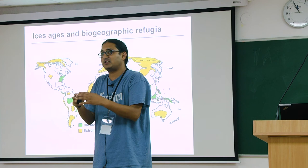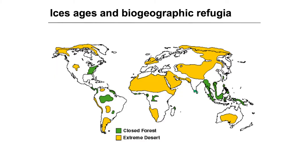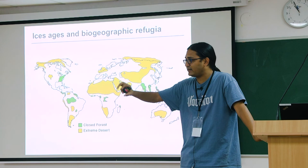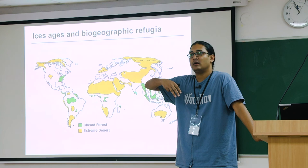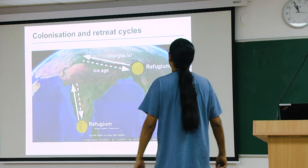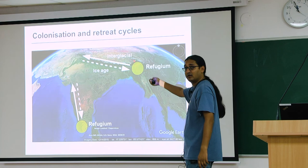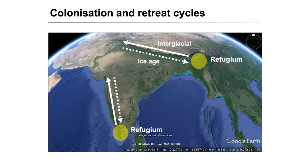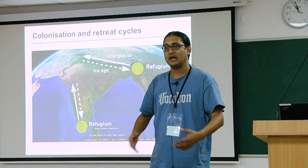The refugia in the Indian subcontinent were Northeast India and the Southern Western Ghats and Sri Lanka. Once species contracted into refugia and the ice started melting, suitable habitat returned and species came out of the refugia to recolonise. During the Ice Age, species retreat to refugia; during interglacials, they recolonise from refugia. We've had multiple cycles of glaciation followed by interglacials, and this push-pull of retreat and recolonisation has happened over and over again.